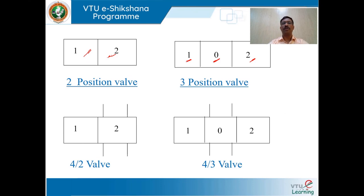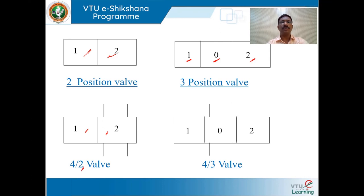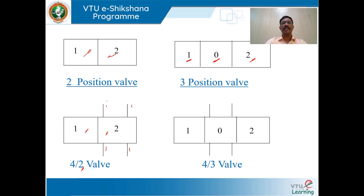To draw a symbol for a 4-way 2-position valve, draw 2 adjacent squares — denoting 2 switching positions — and then show 4 initial connections on the square. Those 4 initial connections indicate a 4-way 2-position directional control valve.